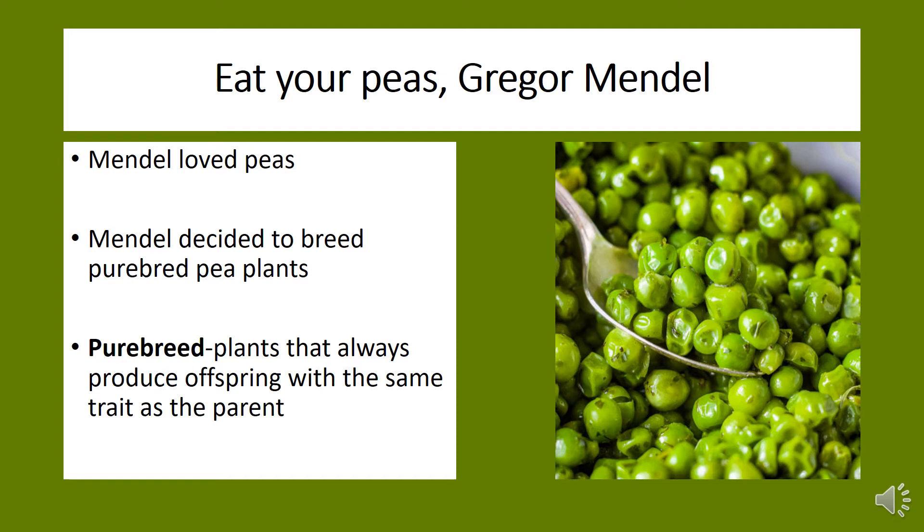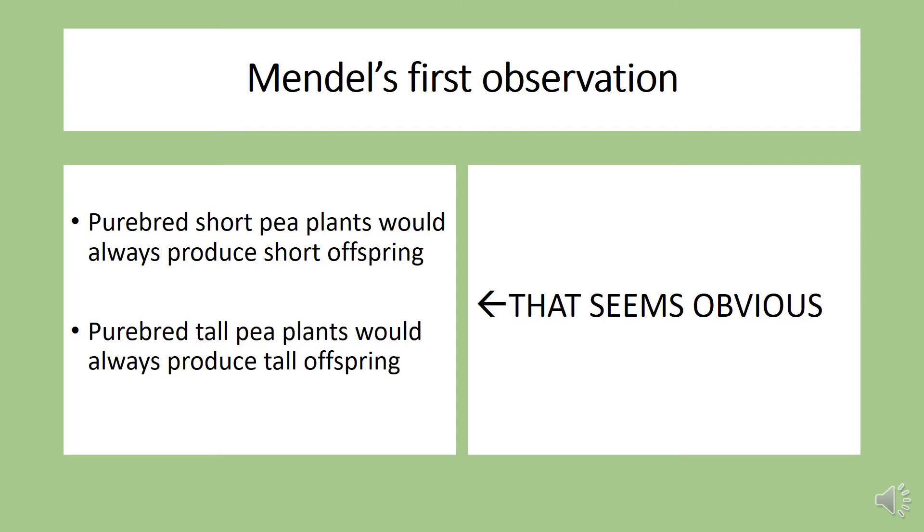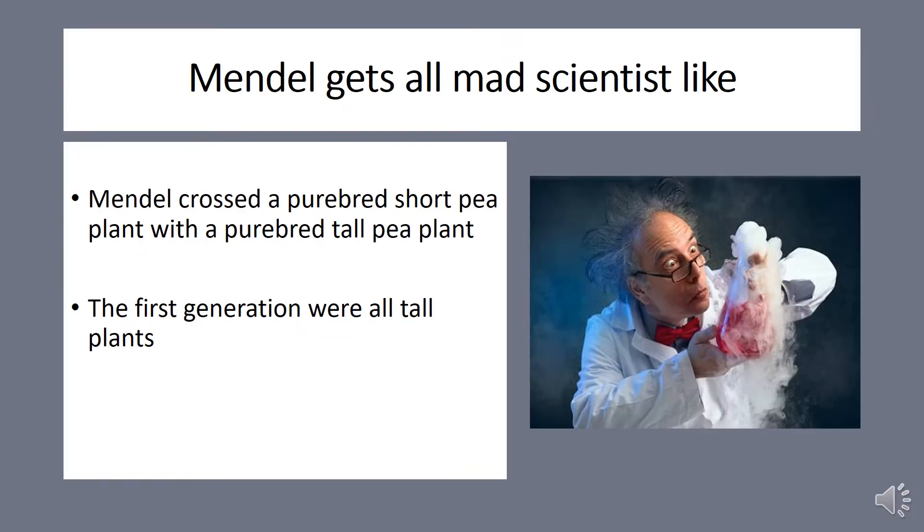The first thing Mendel noticed was that purebred short pea plants would always produce short offspring. Likewise, purebred tall pea plants would always produce tall offspring. One day Mendel decided to turn it up a notch. He crossed the purebred short pea plant with the purebred tall pea plant. The results were the first generation were all tall pea plants.